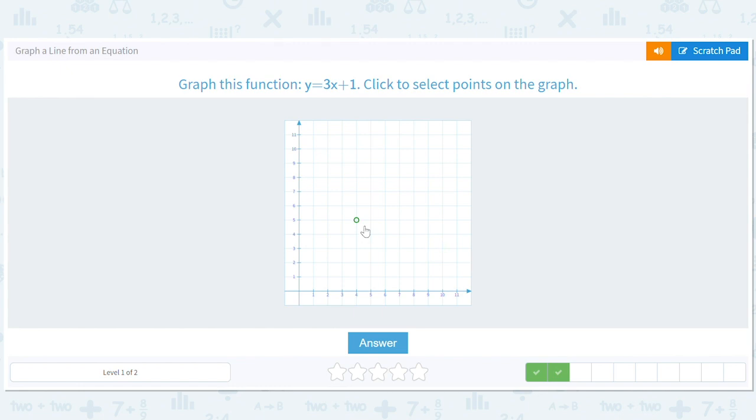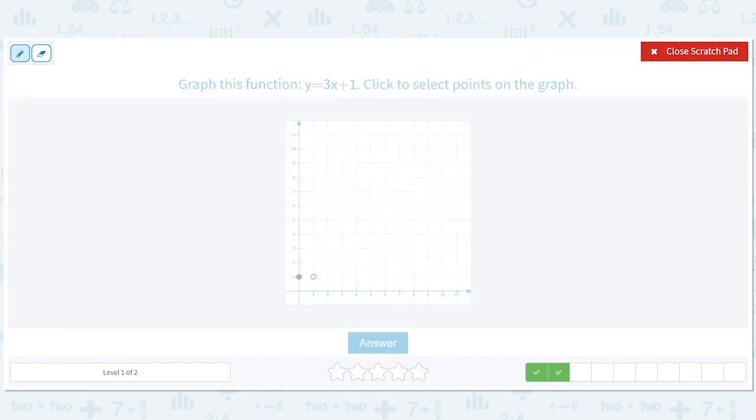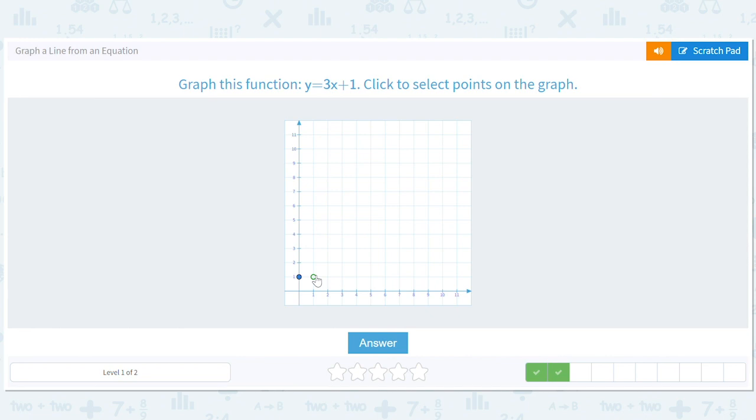So how about this y equals three x plus one. So we will have a y intercept of one and we have a slope of three. So when we move to the right one, we could think of that as three over one is our M. So we have to move over one to rise three. We have to run one to rise three. So one, three, get that line.